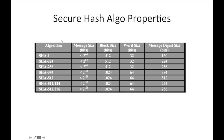Here is a summary of the Secure Hash Algorithm properties. For SHA-1, the message size is less than 2 to the power of 64, the block size is 512 bits, the word size is 32 bits, and the output is 160 bits. For the 64-bit algorithms — SHA-384, SHA-512, SHA-512/224, SHA-512/256 — the block size is 1024 bits, and the message digest size varies based on which algorithm family is used.